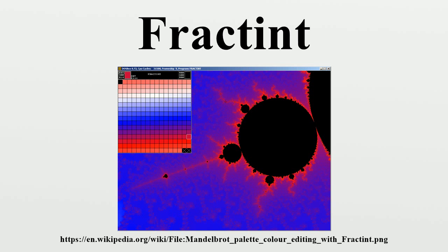These include cellular automata. Fractint originally appeared in 1988 as FRACT-386, a computer program for rendering fractals very quickly on the Intel 80386 processor using integer arithmetic. Most 386 processors of the era did not come with floating-point units, so the integer approach was much faster.